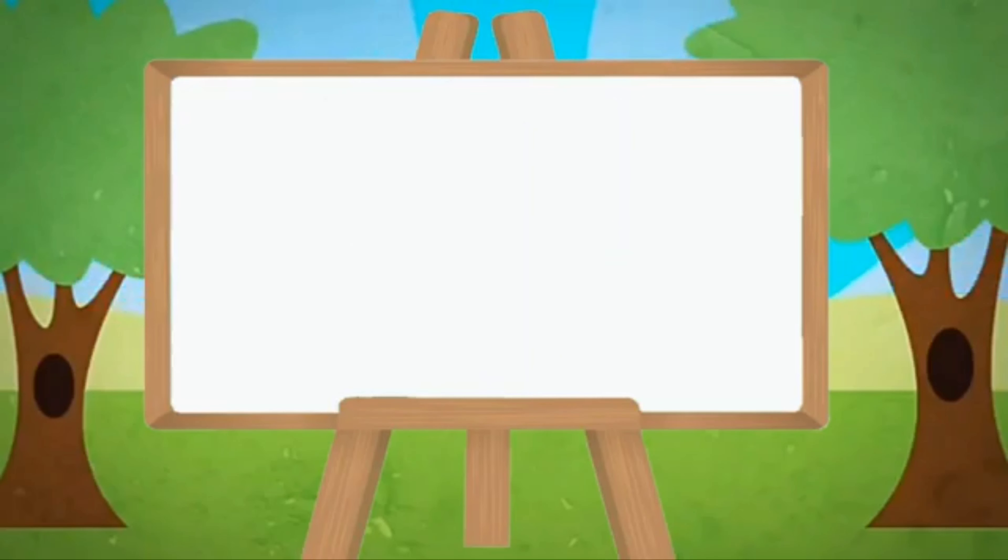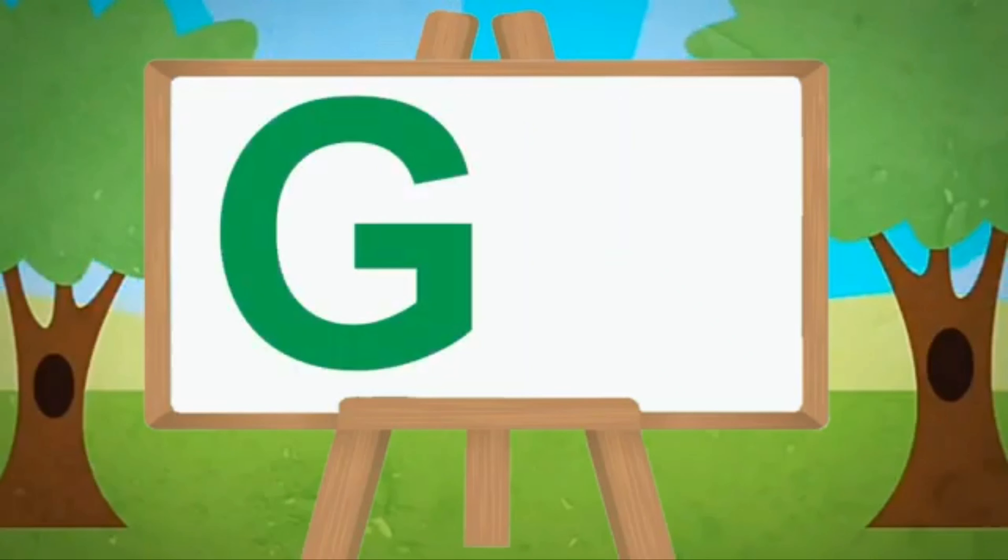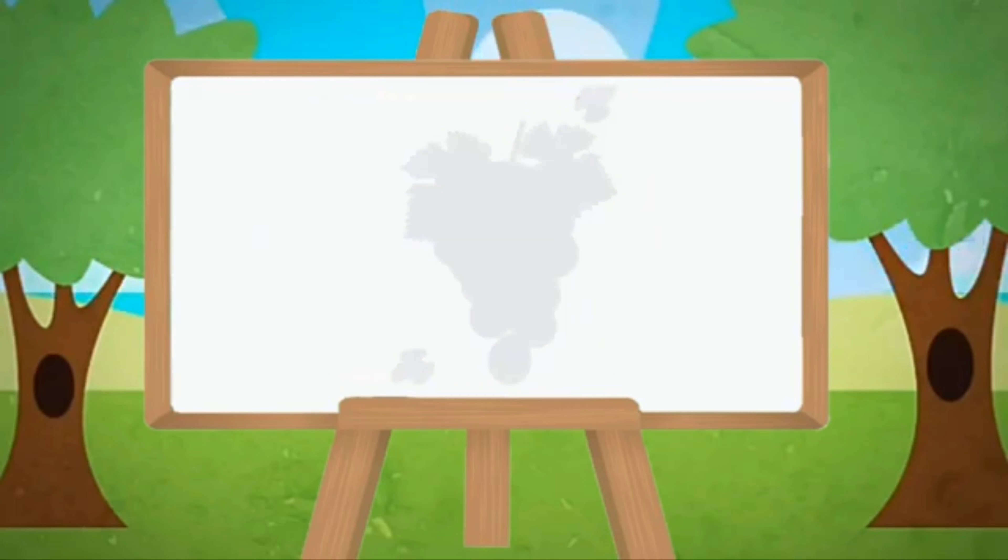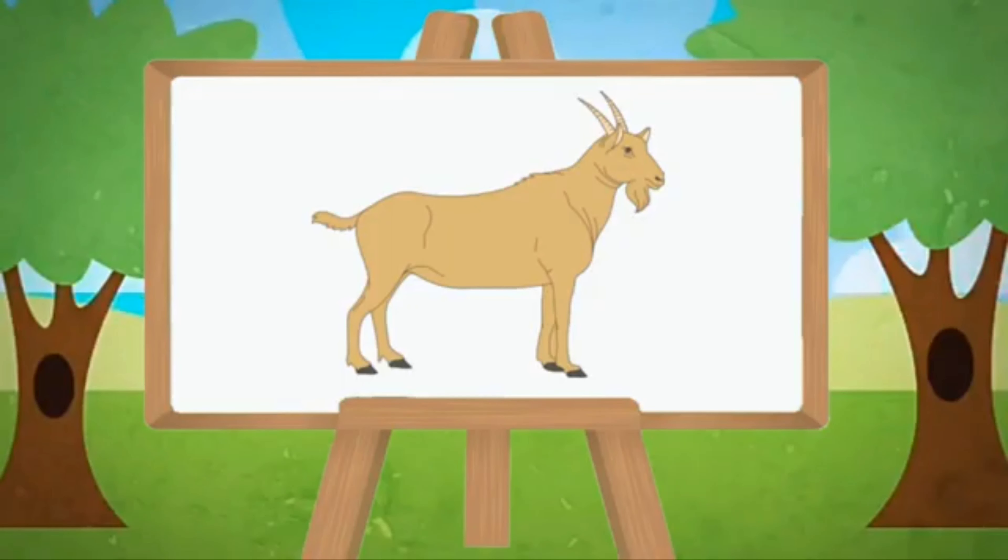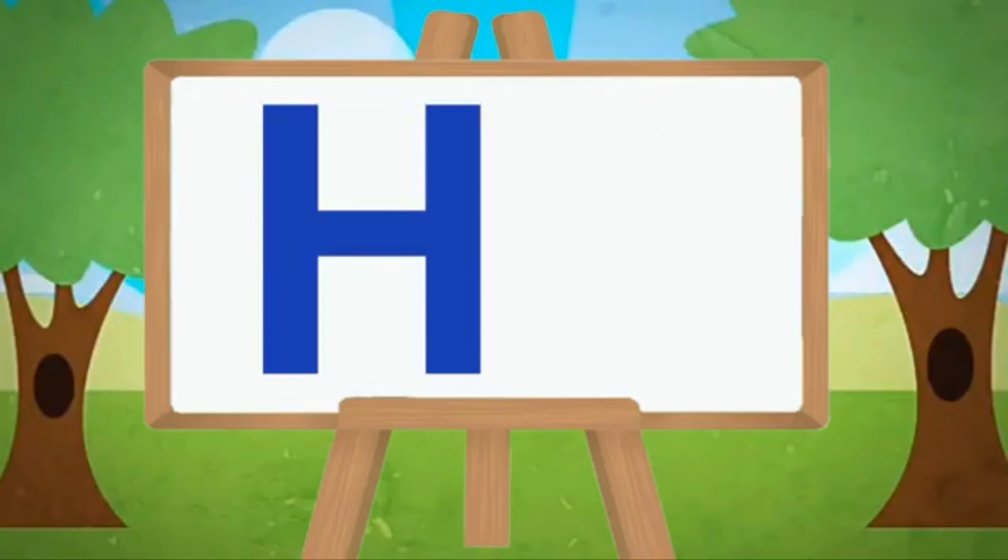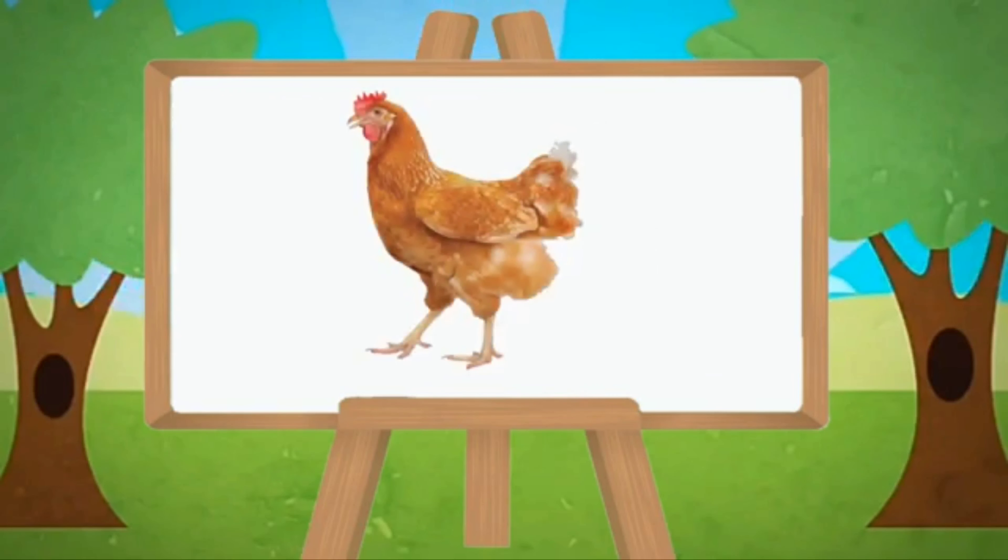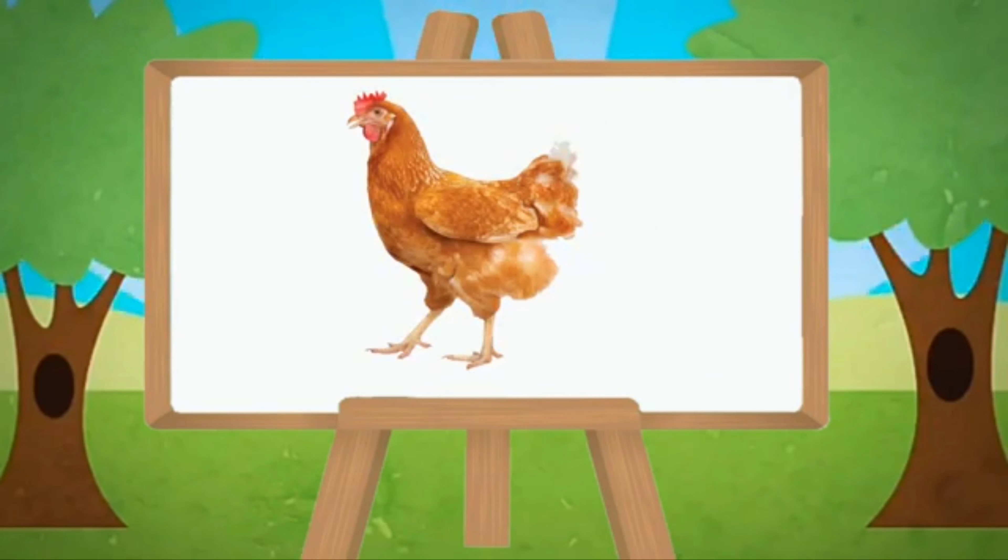Capital G, small g. G for grapes, G for goat. Capital H, small h. H for head, H for hen.